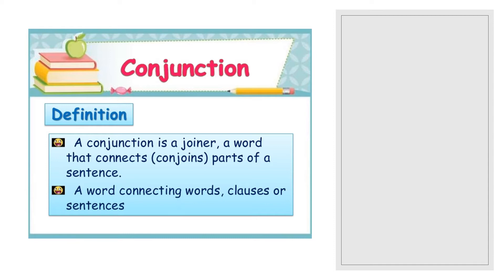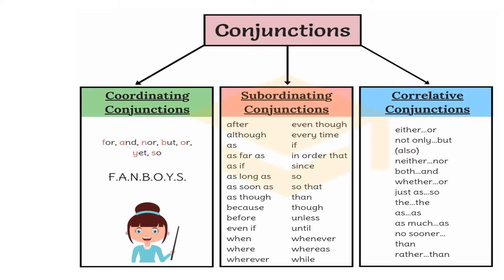We have three types of conjunction. First is coordinating conjunction, second is subordinating, and lastly we call it correlative conjunction. Coordinating conjunction is very simple — we usually use the formula FANBOYS: F for 'for', A for 'and', N for 'nor', B for 'but', O for 'or', Y for 'yet', and S for 'so'.